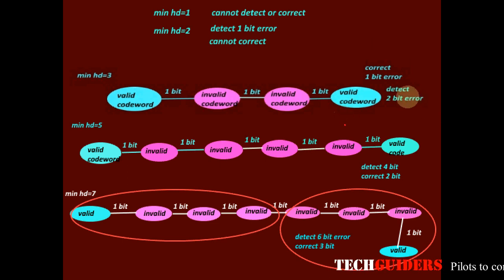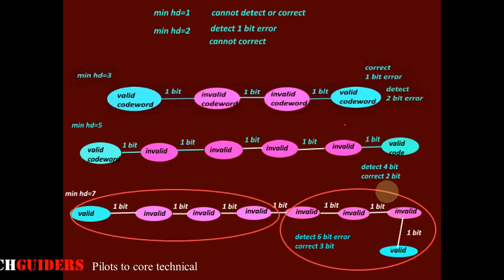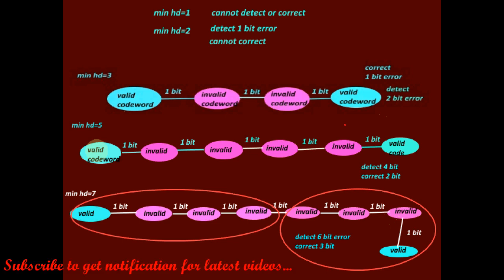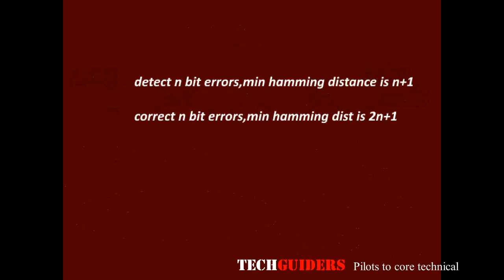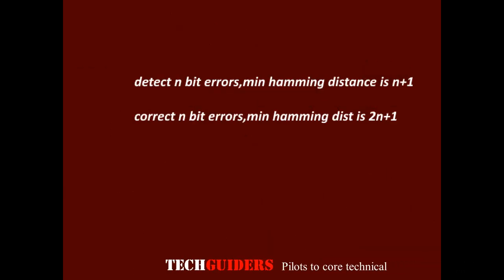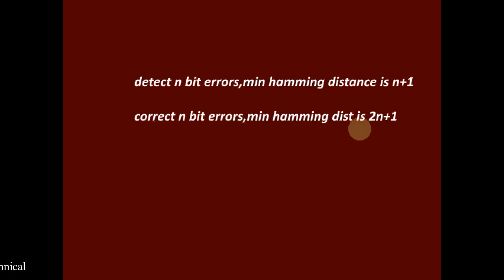To summarize: for 1-bit error correction the minimum Hamming distance required is 3; for 2-bit error correction it is 5; and for 3-bit error correction it is 7. In general, to correct n-bit errors the minimum Hamming distance required is 2n + 1. And to detect n-bit errors, the minimum Hamming distance required is n + 1.